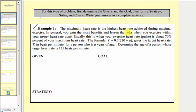We're given the maximum heart rate is the highest heart rate achieved during maximum exercise. In general, you gain the most benefits and lessen the risks when you exercise within your target heart rate zone. Usually this is when your exercise heart rate or pulse is about 70% of your maximum heart rate. The formula T equals 0.7 times the quantity 220 minus A gives the target heart rate T in beats per minute for a person who is A years of age. We're asked to determine the age of a person whose target heart rate is 135 beats per minute.